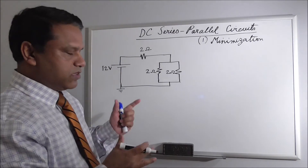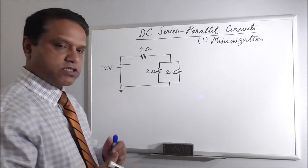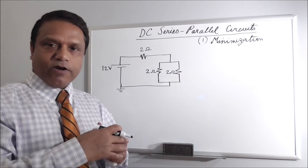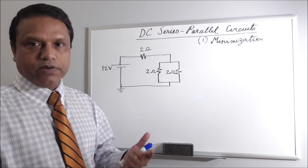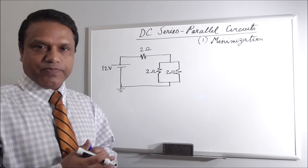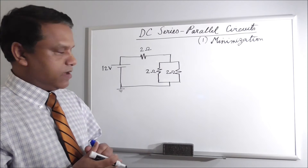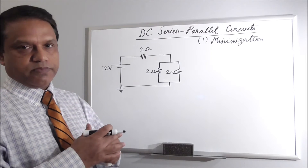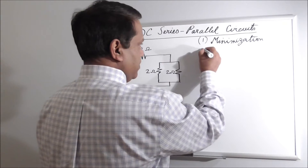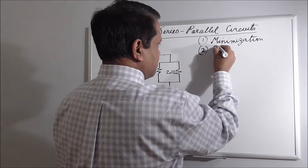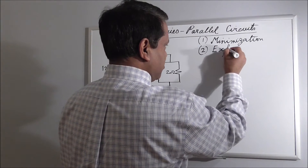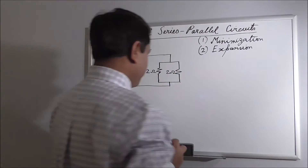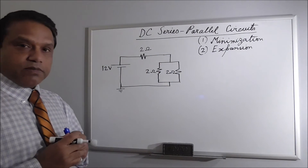After minimization and finding the source current, we will go back and expand the circuit to its original shape so we can find the currents in the branches we reduced in the first step. The second step will be expanding back — or expansion. Let's do the minimization first.